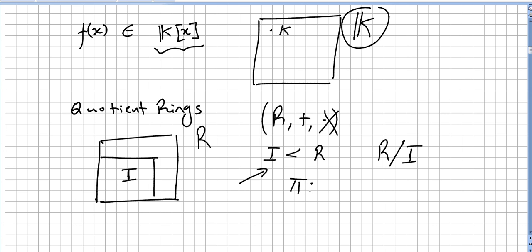We are going to define this as a map pi that will take us from the ring to the quotient, given by pi(a) equals a + I. So we can write this in additive notation as a + I will be the same as b + I.